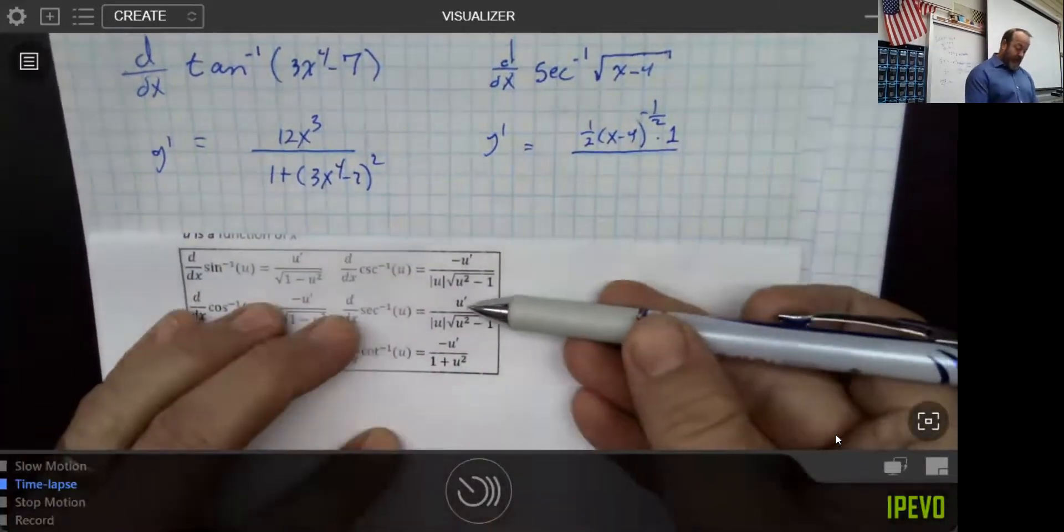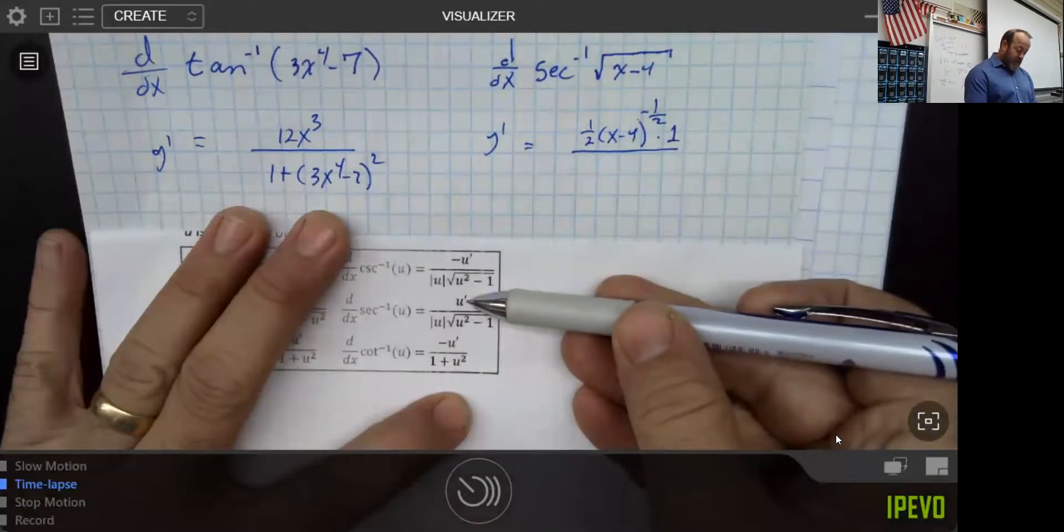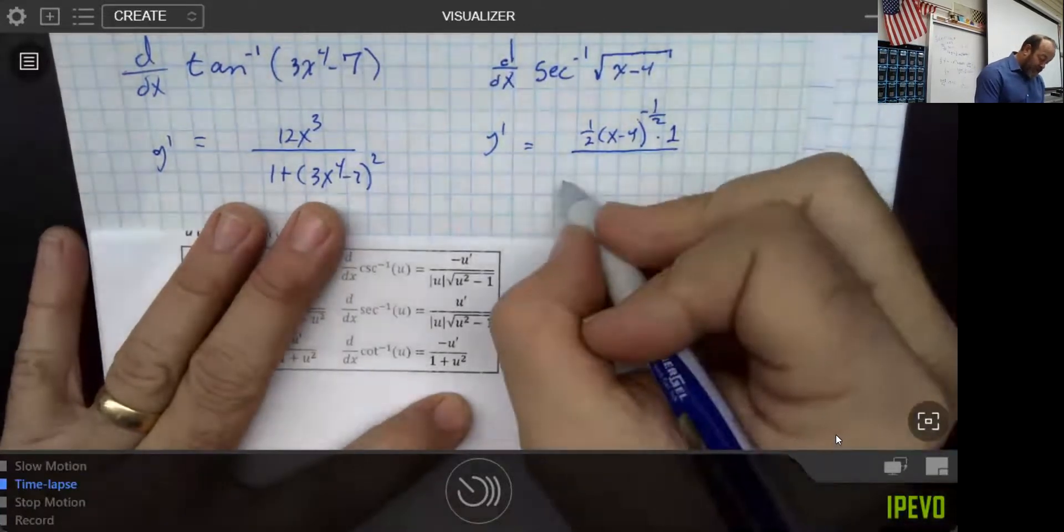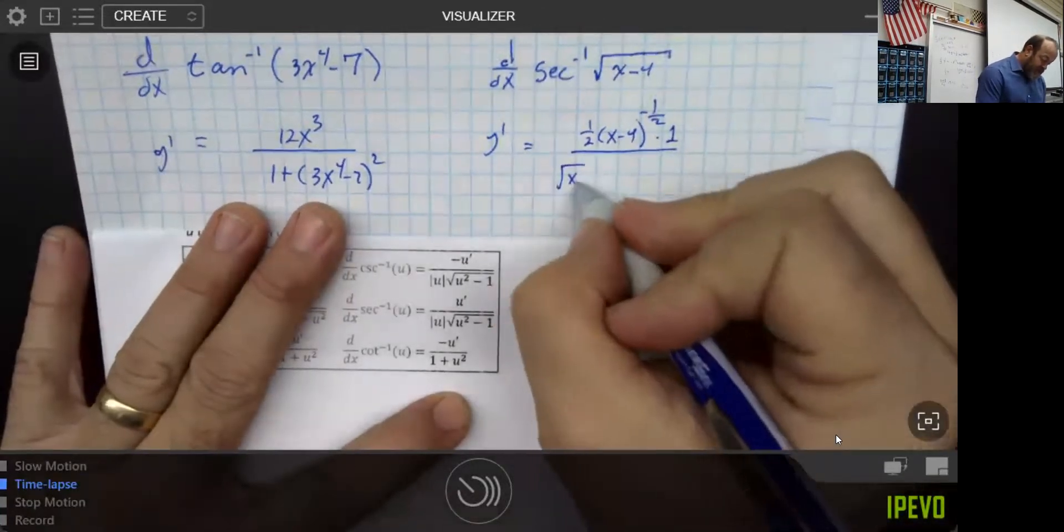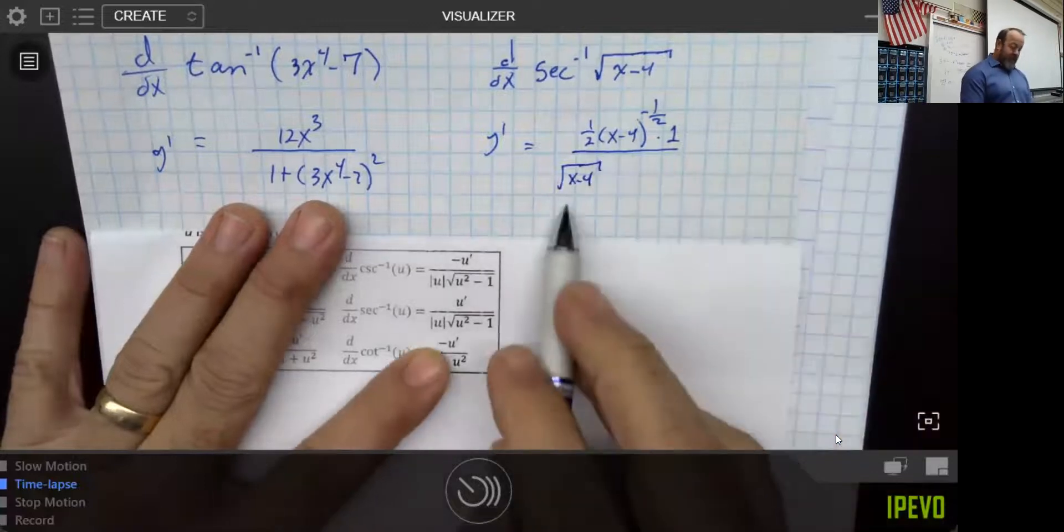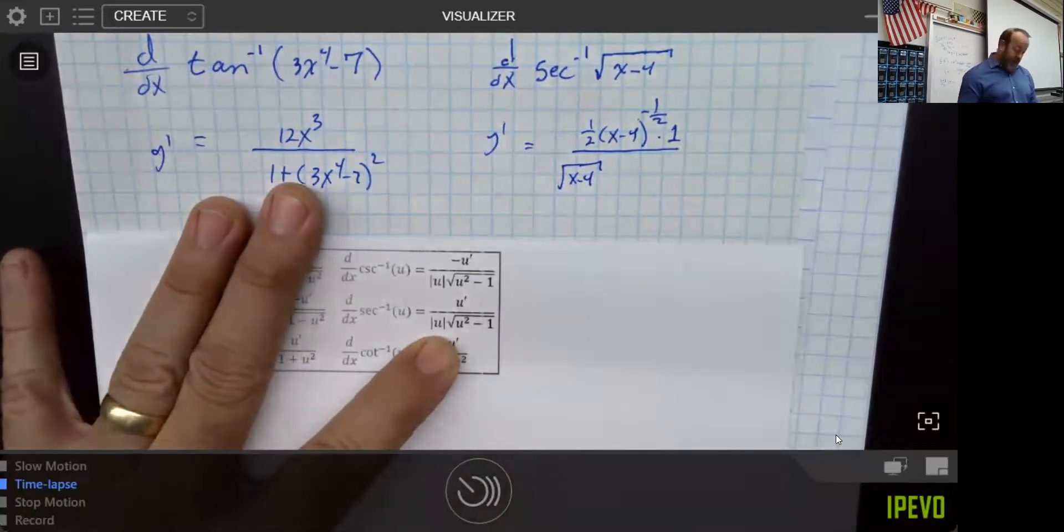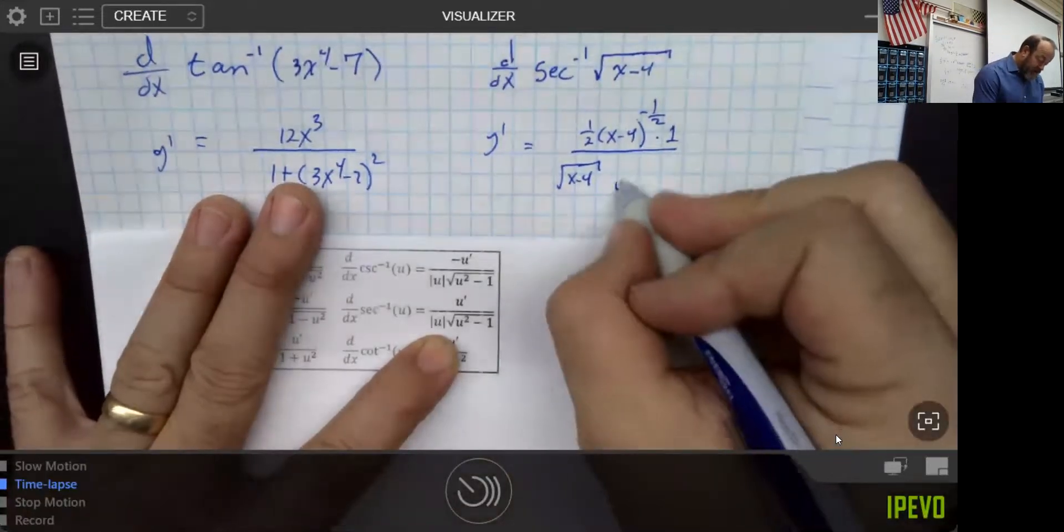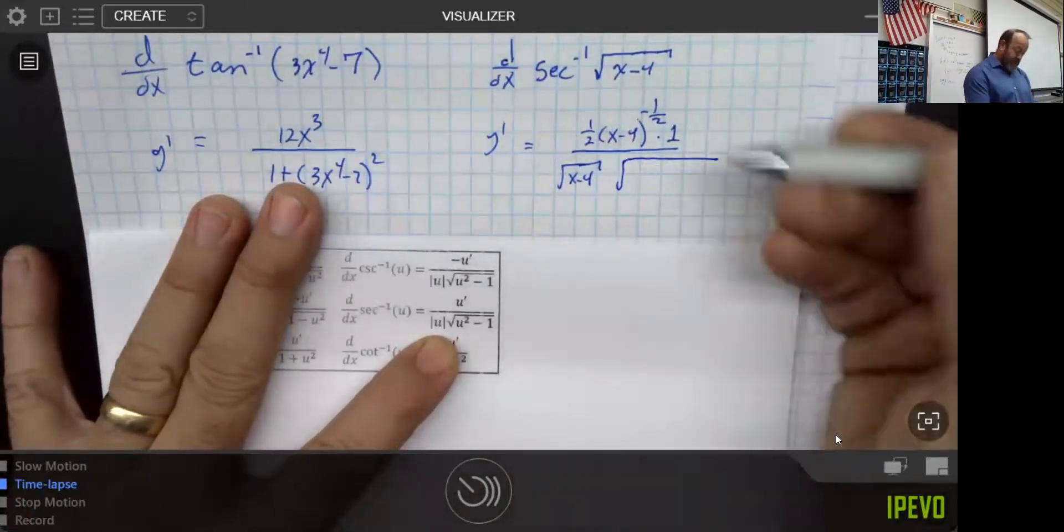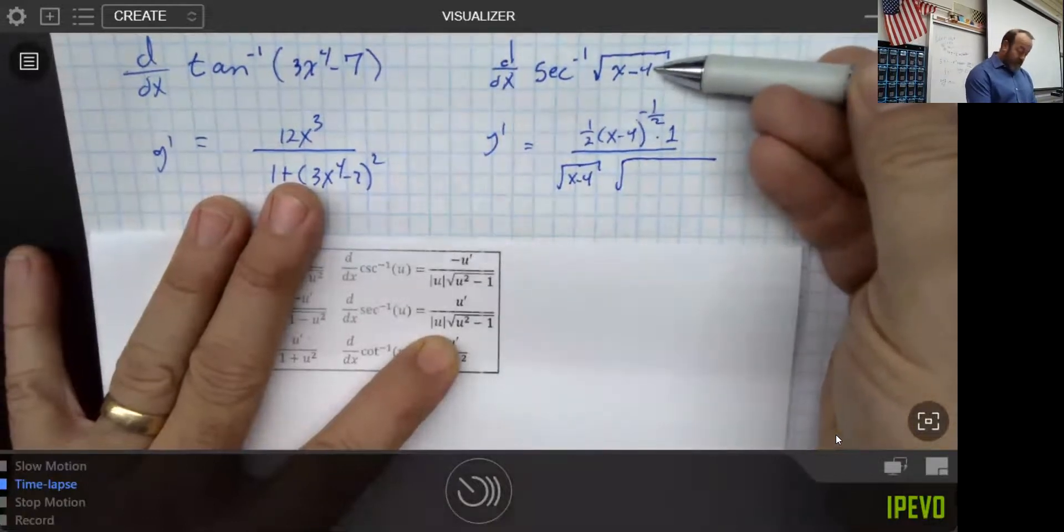I now have the u prime done. Then it says over the absolute value of u, which would be this. Now, interestingly enough, in this case, putting an absolute value on that square root is irrelevant. I could put it on there, but it wouldn't matter.